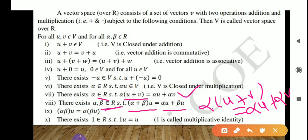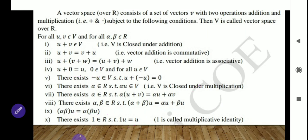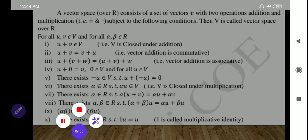The ninth property is associativity of scalar multiplication: if α, β belong to R and U belongs to V, then α(βU) = (αβ)U. The tenth property is the multiplicative identity: there exists 1 belonging to R such that 1·U = U. Note that the additive identity 0 belongs to V, so U + 0 = U where 0 is the scalar additive identity. If these ten properties are satisfied, then we can say that V is a vector space.